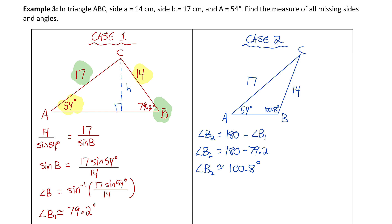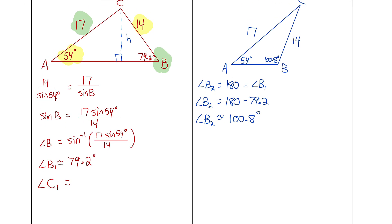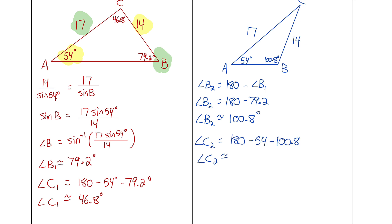Since the two triangles have different measures for angle B, that makes angle C and the length of side C different in each case. Working with case one: all three angles add to 180, so angle C equals 180 minus 54 minus 79.2, which is approximately 46.8 degrees. In case two, angle C equals 180 minus 54 minus 100.8, which gives a second possibility of 25.2 degrees.